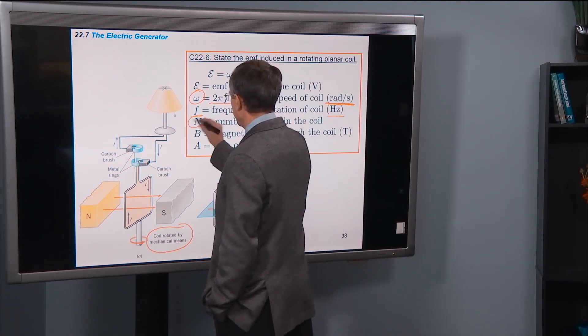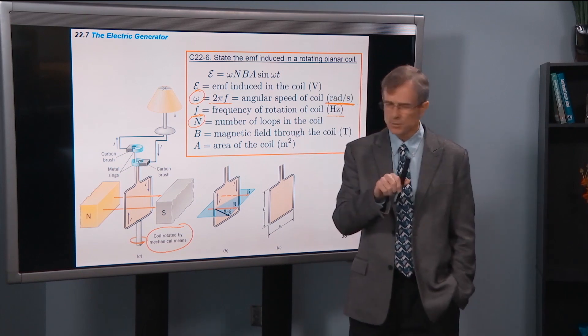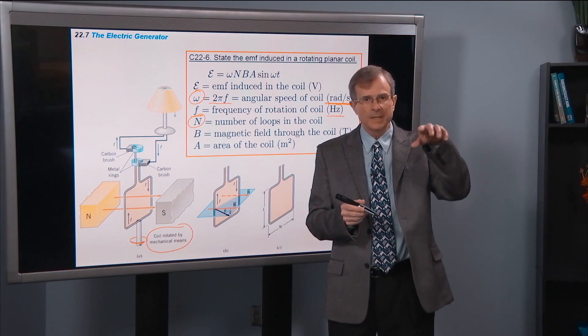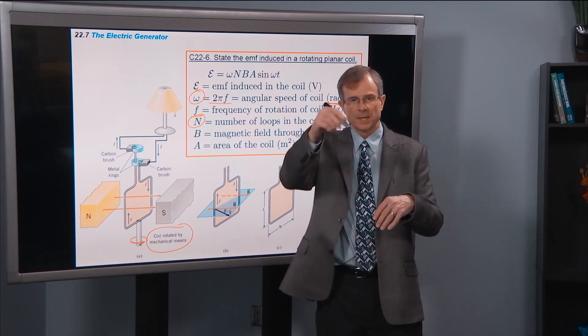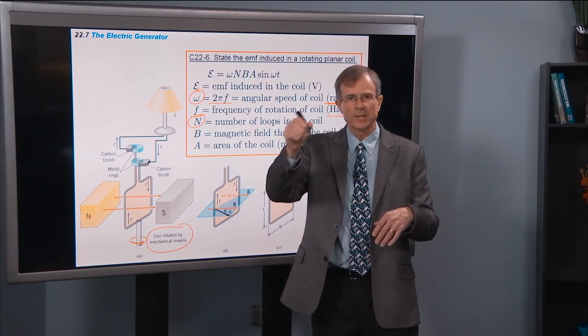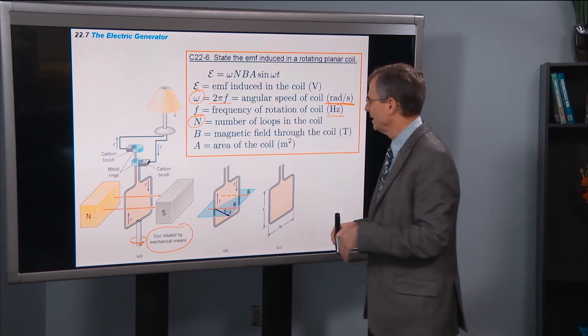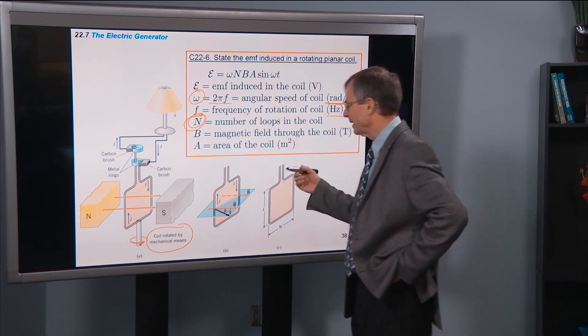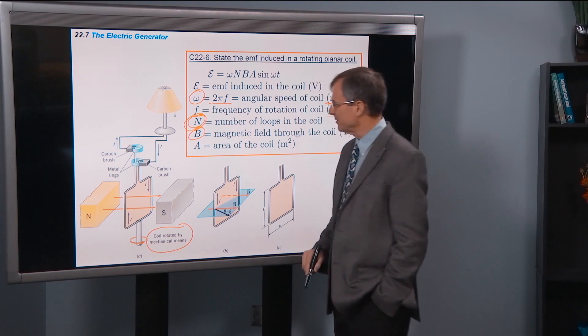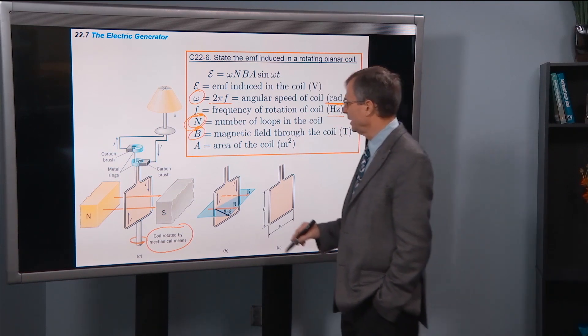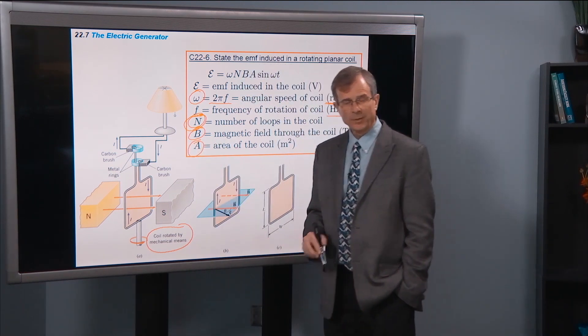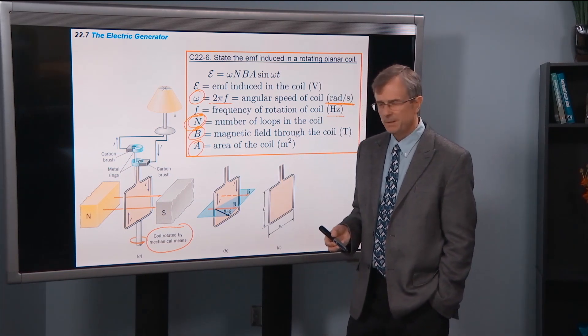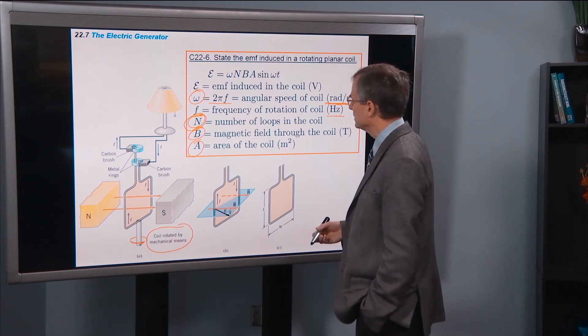N is the number of loops in the coil. That always appears in Faraday's law. The script E is minus N times change in flux divided by the change in time. That's why this number of loops appears in there. Magnetic field B, you can't get an EMF generator without a magnetic field. Area of the coil is related to the magnetic flux. B times A times the cosine of the angle between is the magnetic flux.